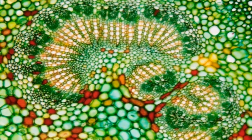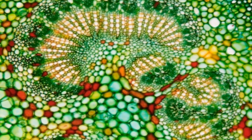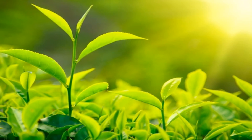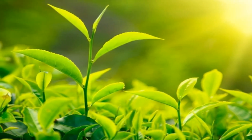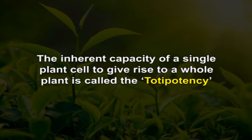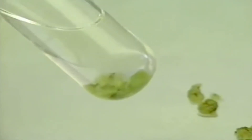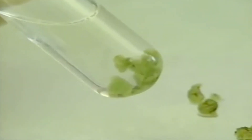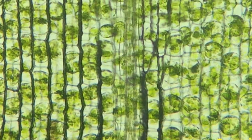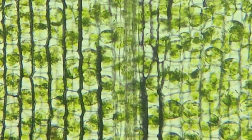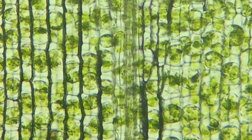Plasticity allows one type of tissue or organ to be developed from another type in culture, and in this way whole plants can be subsequently regenerated. The inherent capacity of a single plant cell to give rise to a whole plant is called totipotency. Otherwise stated, the regeneration of a whole plant from a single plant cell provided with the correct stimuli is also called totipotency. Plant tissue culture technique is effective because almost all plant cells are totipotent — each cell has the genetic information and cellular machinery necessary to generate the whole organism. Totipotency is generally exposed when cells or tissues are disturbed or removed from their normal environment and placed onto artificial media in tissue culture.